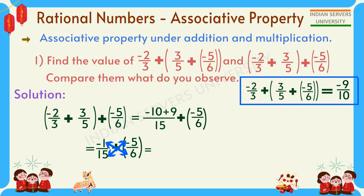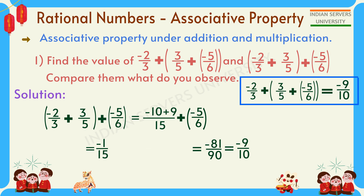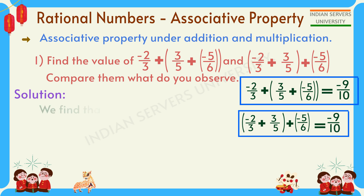Cross multiplication: 6 × (-1) = -6, 15 × (-5) = -75, denominator 15 × 6 = 90. So -81/90, which equals -9/10. Both expressions give the same result, so we find that addition is associative.